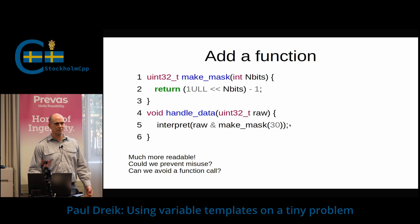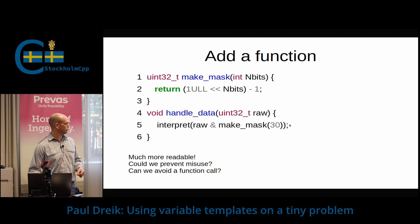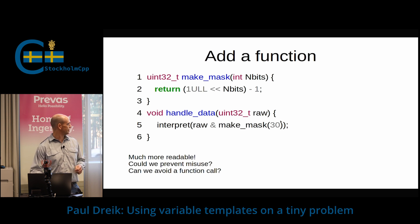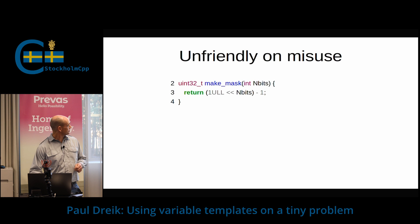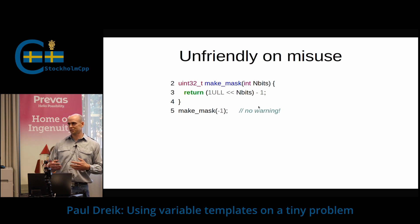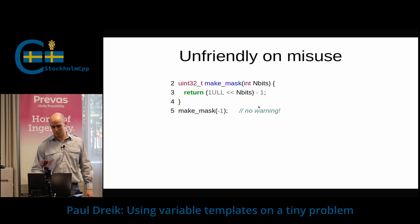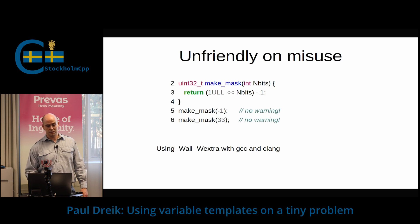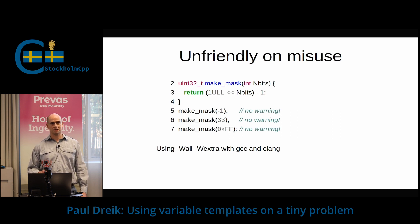But it has a downside. It's a function, so that means in debug mode you have to go into that function. I'm bothered by it. And also, which is much worse, if we misuse it and specify a bad number of bits, what happens then? If we try to get minus one bits, we don't get a warning — not in Clang, not in GCC, not on -Wall, not in -Wextra. So that's pretty bad. And if we specify more bits than fits in 32-bit ints, that's still the same. Or if someone misunderstands how it's supposed to be used and tries to give the mask directly.